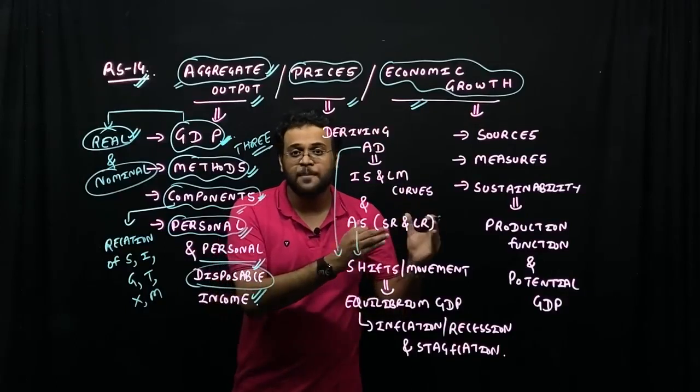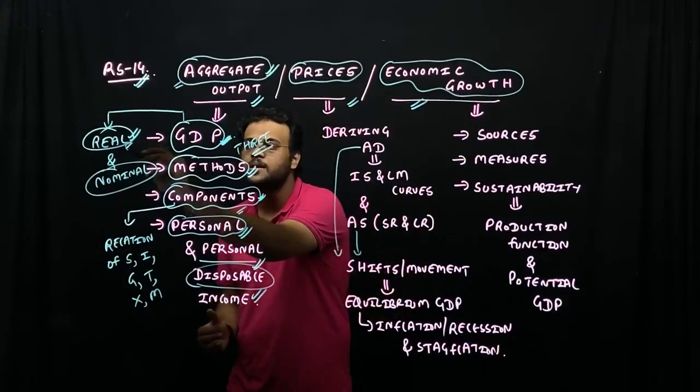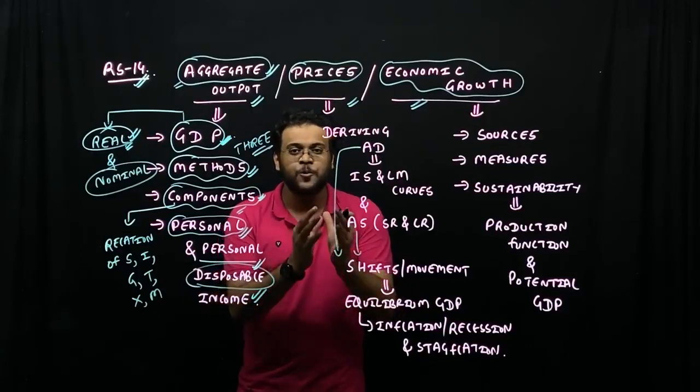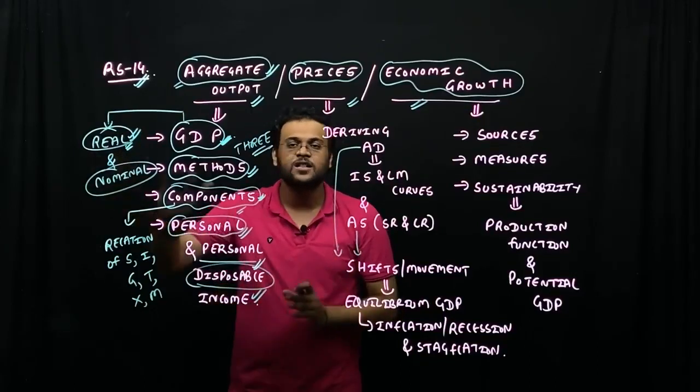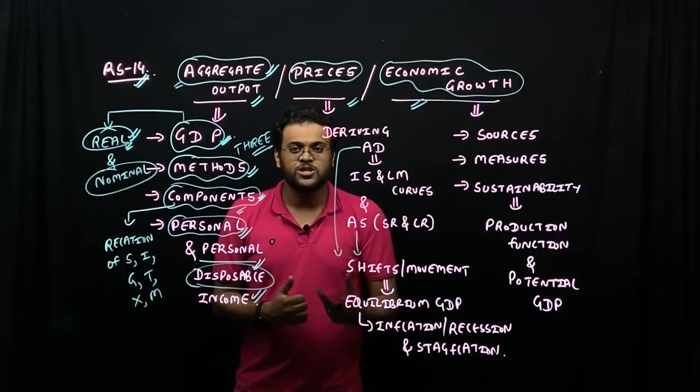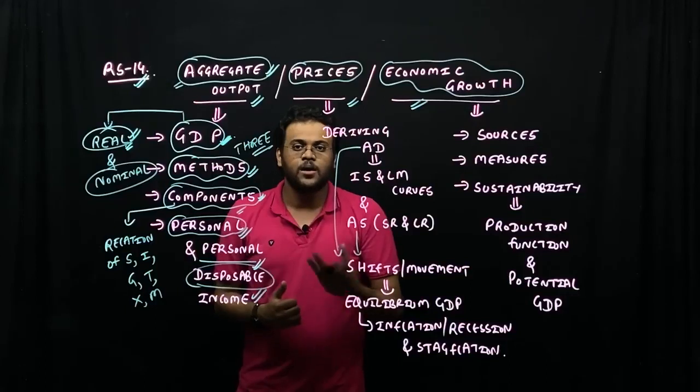There is a GDP which removes the impact of inflation, which we call real GDP. Without price impact, it reflects the actual output. Real GDP is a true reflection, true picture of economic growth.